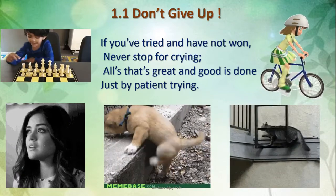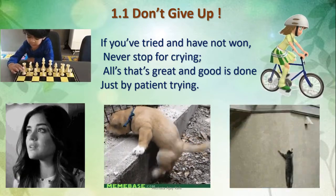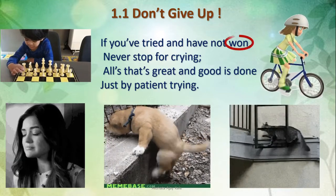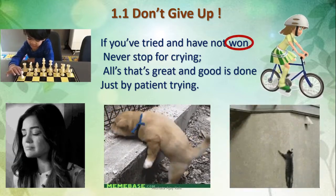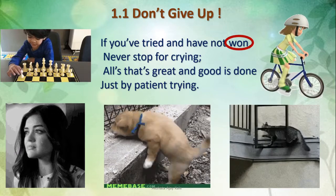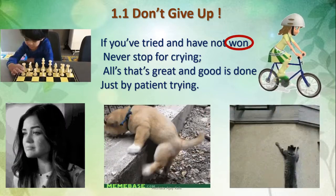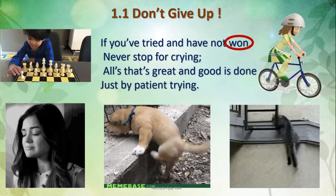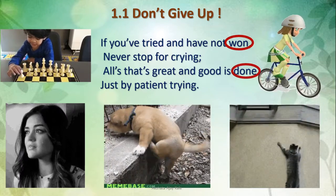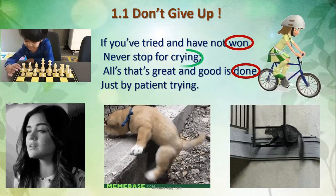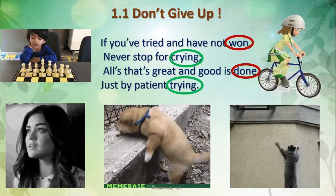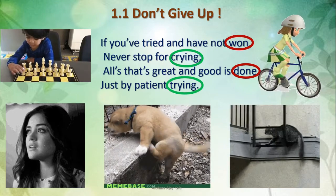Dear children, in this first stanza we can go through the words and find two rhyming pairs. Rhyming pairs are words that sound similar. The last word of the first line is 'one', and it rhymes with the last word of the third line, 'done' — they sound similar. Like that, 'crying' rhymes with 'trying.' I hope you understood the first stanza.